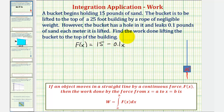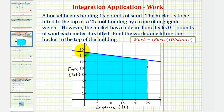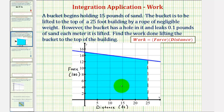Before we find the work done lifting the bucket to the top of the building, let's look at the graph of this function on the coordinate plane. It's graphed here in blue. The horizontal axis is distance in feet and the vertical axis is force in pounds. Since work equals force times distance, the area under the function and above the horizontal axis over this closed interval gives the work to lift the bucket. By the shape we could use the area formula for a trapezoid, but let's use the definite integral instead.